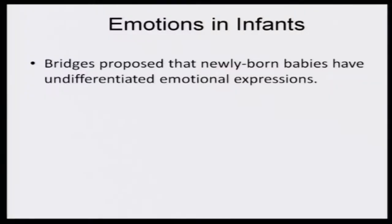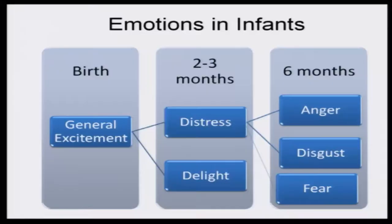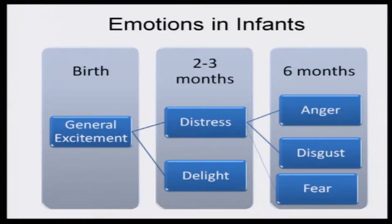Bridges proposed that newly born human babies have undifferentiated emotional expressions which, with the passage of time, get further differentiated. According to Bridges' model, at birth the child has nothing but a general level of excitement, which by the end of the second or third month converts into distress and delight. By the end of the sixth month, the child learns to express anger, disgust, and fear — which are further expansions from the expression of distress.